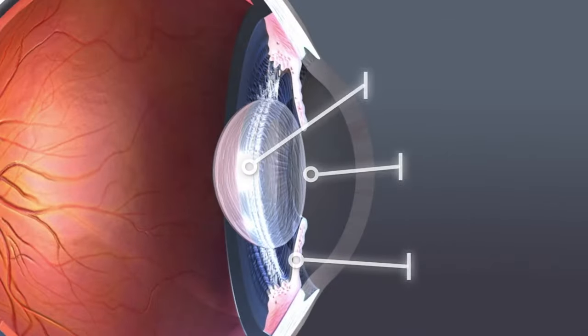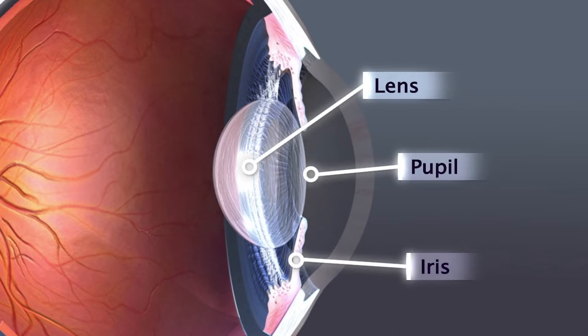The lens is clear and lies between the iris and the pupil. It works much like a camera lens, focusing light, or an image, on the retina.